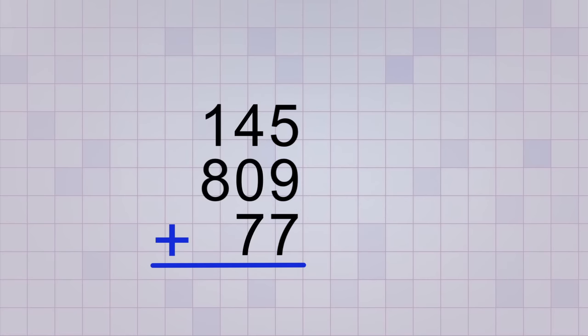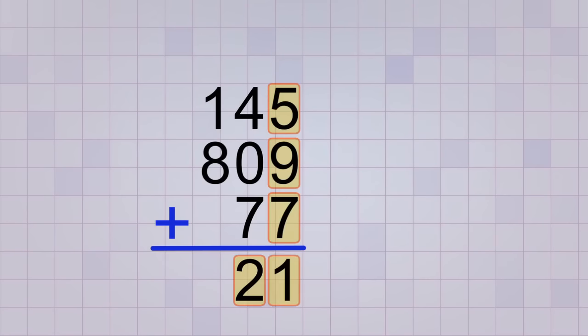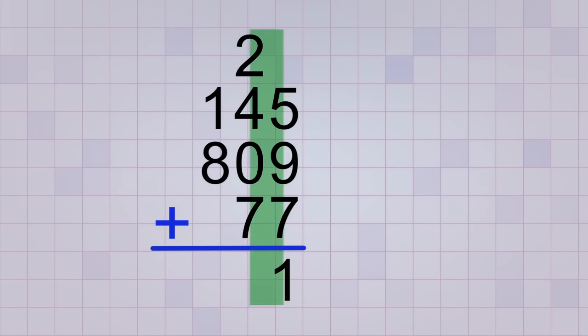And as always, we add up the digits in the right-hand column first. 5 plus 9 plus 7 equals 21. Because that answer is a 2-digit number, we need to carry the first digit to the next column, which is like moving a group of 20 over and leaving the 1 behind.